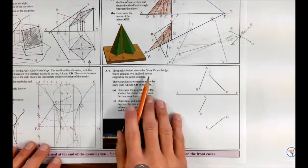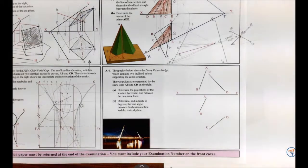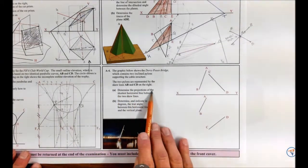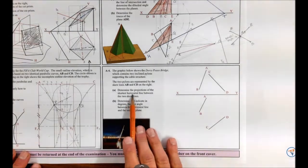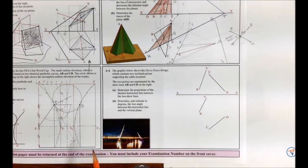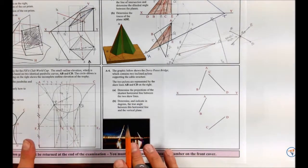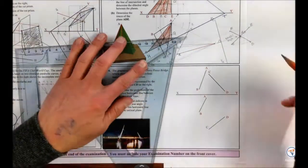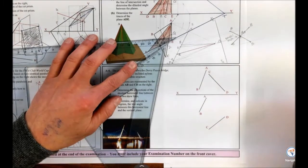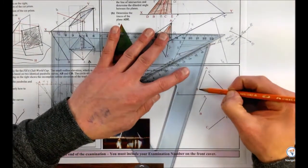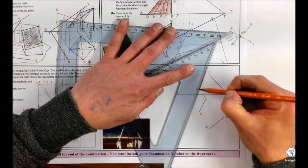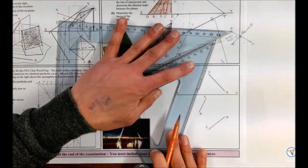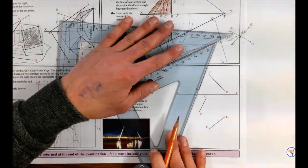Skew lines for A4 is pretty much the same method all the time. We have two lines AB and CD in elevation and plan. Determine the projection of the shortest horizontal distance — that's going to be important later — between the two skew lines. It doesn't matter whether we want shortest distance or shortest horizontal distance; we do the same setup. I'm going to make a plane using these two lines.